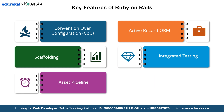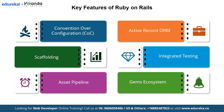Another feature is the Asset Pipeline, which helps manage and optimize assets like CSS, JavaScript and images, improving the performance of your application. Finally, Rails supports a vast ecosystem of Gems — pre-built code packages that add functionality to your app without reinventing the wheel. Together, these features make Ruby on Rails not only powerful but also developer-friendly, enabling faster and cleaner application development.